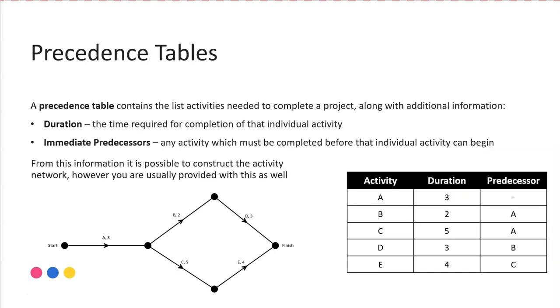When we're looking at these precedence tables, there's a number of things that may be included, but the most common and the most useful things are the duration, the time it takes to complete a particular activity, and the predecessors or immediate predecessors. The immediate predecessor listed in the table, if we look here for activity B, we're told an immediate predecessor is activity A. So that means visually activity B cannot commence until activity A has been completed.